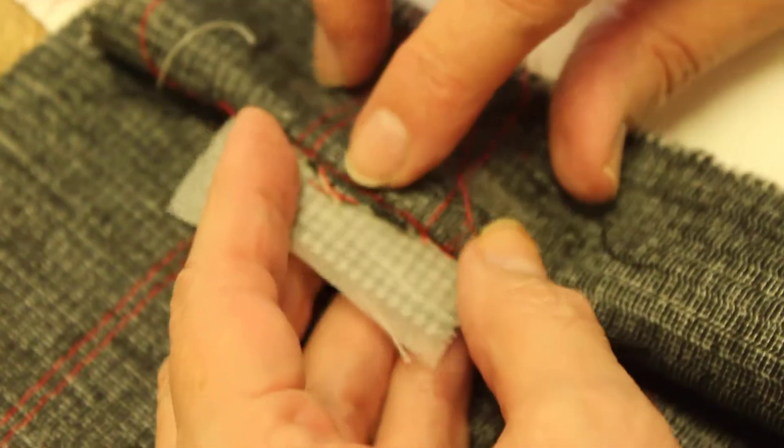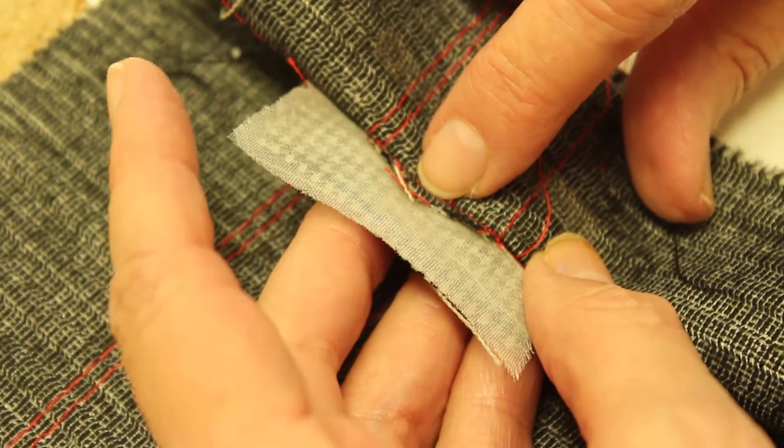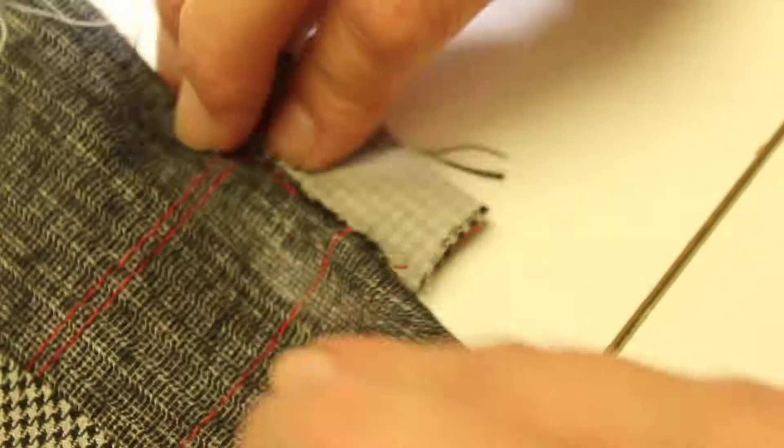Okay, so I've sewn this side, and on this one I started in the middle, went down, turned around and came up and went back. But your book shows a different way, so I'm going to do it a little differently on this side.